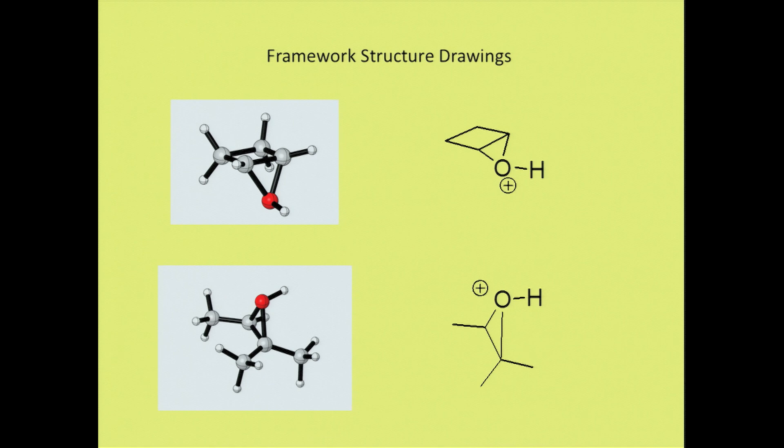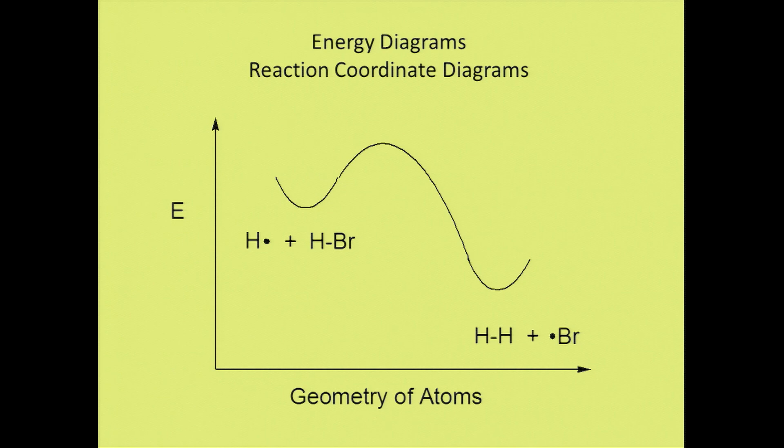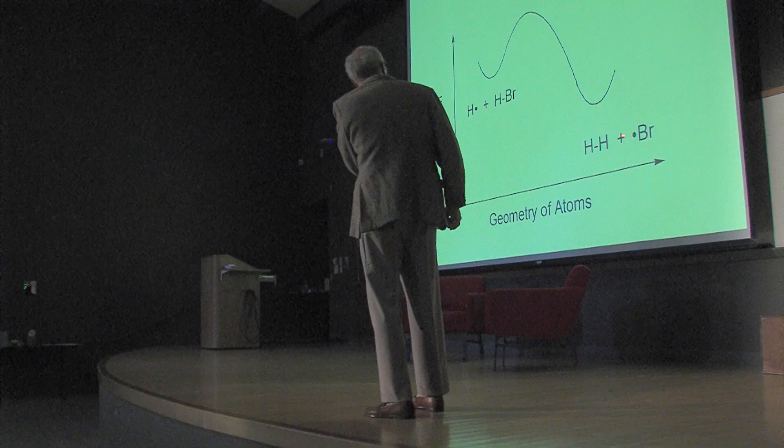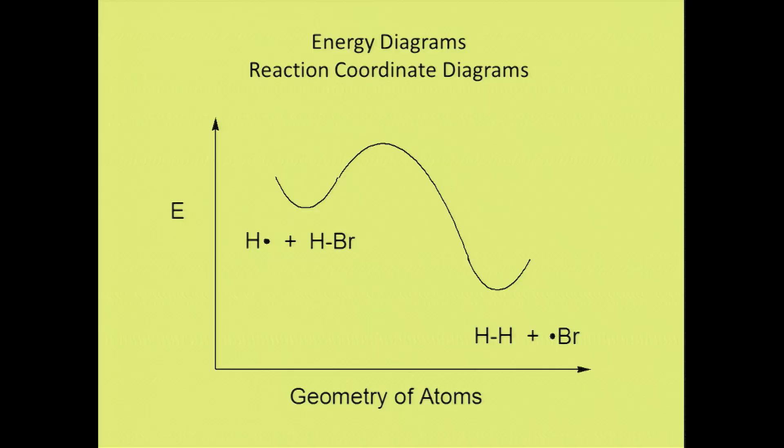Next I'm going to show you how chemists generally envision energy in chemical reactions. Energy is everything in chemistry—the beginning and end of understanding what's going on. This is a very simple fundamental reaction. A hydrogen atom pulls a hydrogen off of HBr, makes a new hydrogen-hydrogen bond, the Br leaves. The geometry is shown as you shrink the HH distance and lengthen the HBr distance.